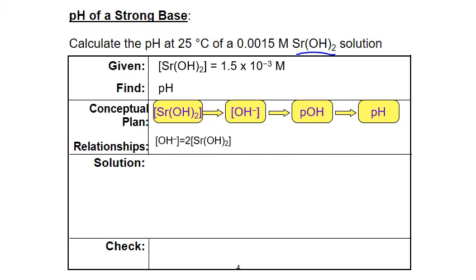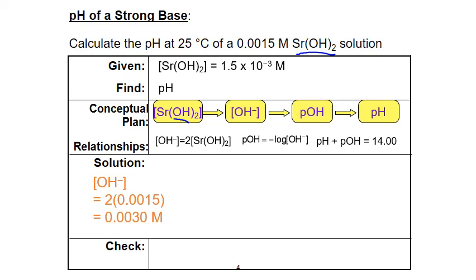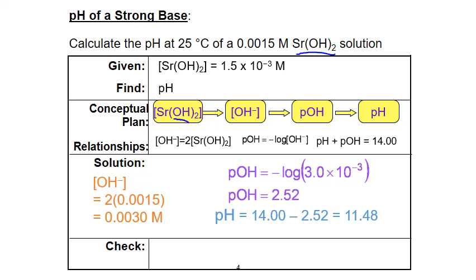We know that the concentration of hydroxide for a strong base is equal to the number of OH units in the formula times the concentration of that base. We have two OH units in our formula, so we multiply our concentration of strontium hydroxide by two to get hydroxide. We calculate pOH as the negative log of the hydroxide ion concentration, then find pH from its relationship with pOH. Hydroxide equals two times 0.0015 moles per liter, giving 0.0030 moles per liter. Plugging into our pOH formula gives pOH = 2.52. Then pH equals 14 minus 2.52, which is 11.48.